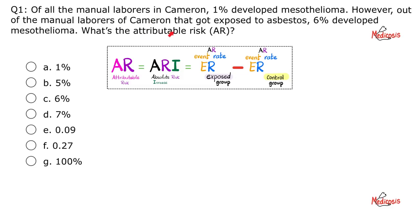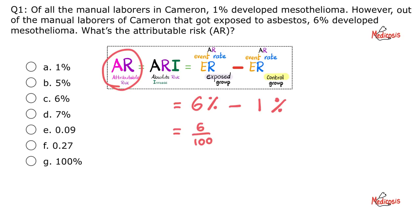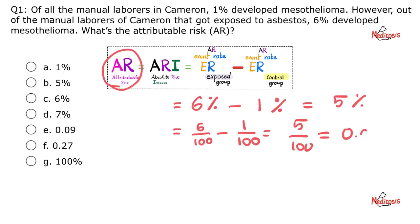Let's practice. Attributable risk or absolute risk increase equals the bigger number minus the smaller number. The bigger number is 6% and the smaller number is 1%. 6% means 6 in 100 — the number of mesotheliomas per 100 individuals exposed to asbestos — minus 1 in 100, the number of mesotheliomas per 100 persons not exposed to asbestos. This gives 5%, which is the same as 5 in 100 or 0.05. The correct answer is choice B, as in biostatistics.